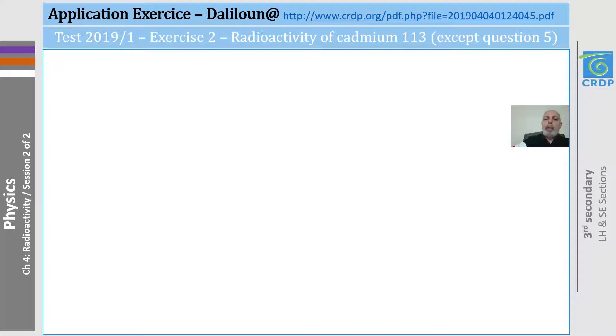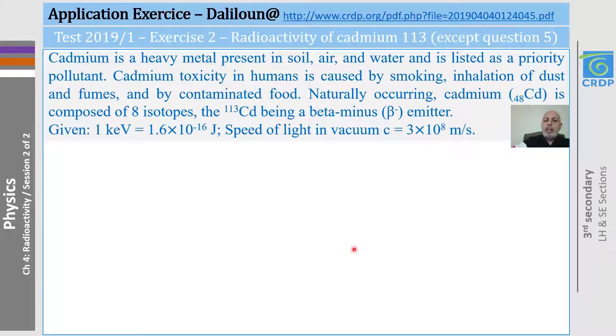And as I told you at the beginning, this exercise is taken from the CRDP website, DaliloNet, and here is its link. Test 2019-1, exercise 2, we'll do it without question number 5. In this exercise, I will remind you about what we did in the last session. And this last part of the exercise will not be needed, but I kept it on purpose because I didn't want to remove anything from the given. Let's read the exercise and answer the questions.